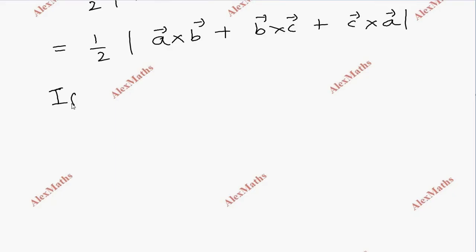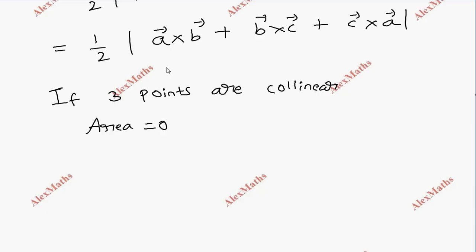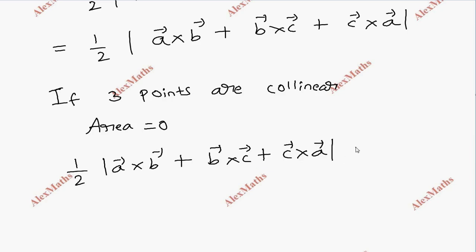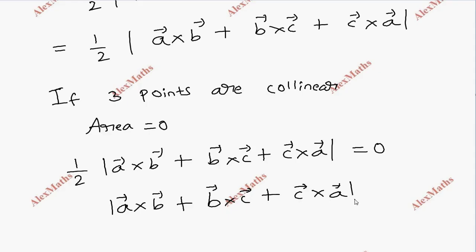If three points are collinear, the area equals zero. So already area equals zero means half of a cross b plus b cross c plus c cross a equals zero. Therefore the condition is: a cross b plus b cross c plus c cross a equals zero.